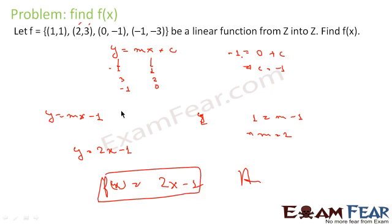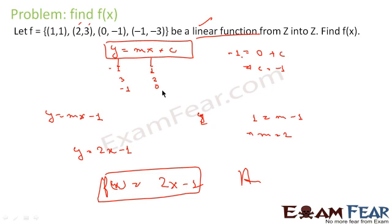What we have done: we took the generic equation y = mx + c, substituted the given values to find m and c. m comes out to be 2 and c comes out to be minus 1, so we replaced them to get y = 2x minus 1. Therefore f(x) = 2x minus 1 is the answer.